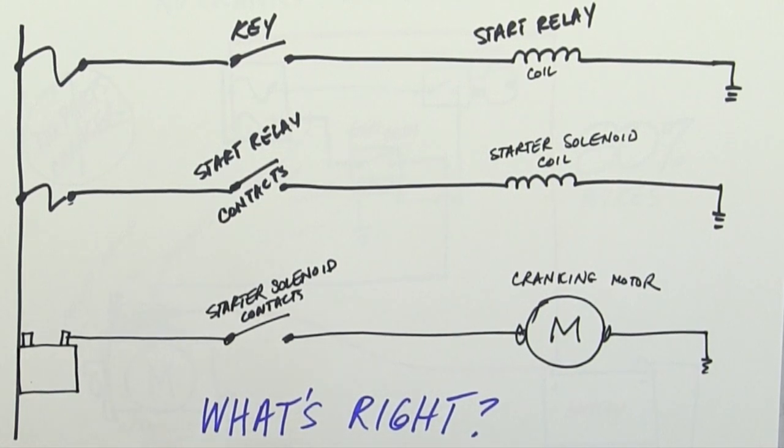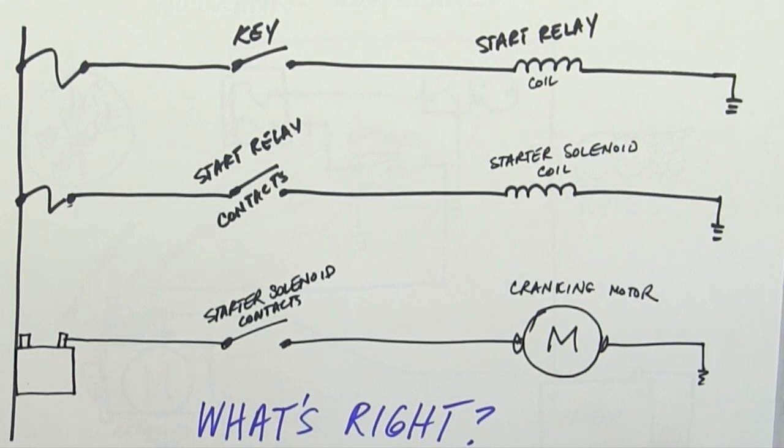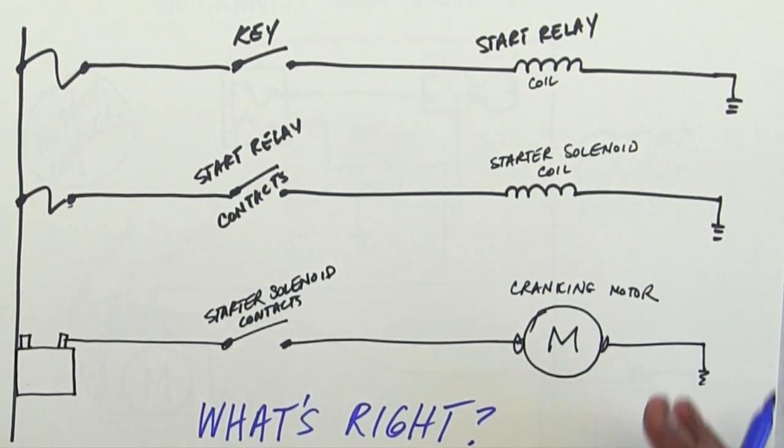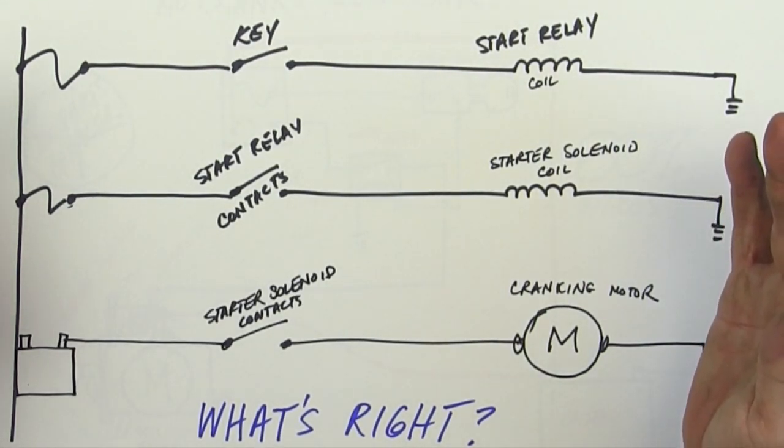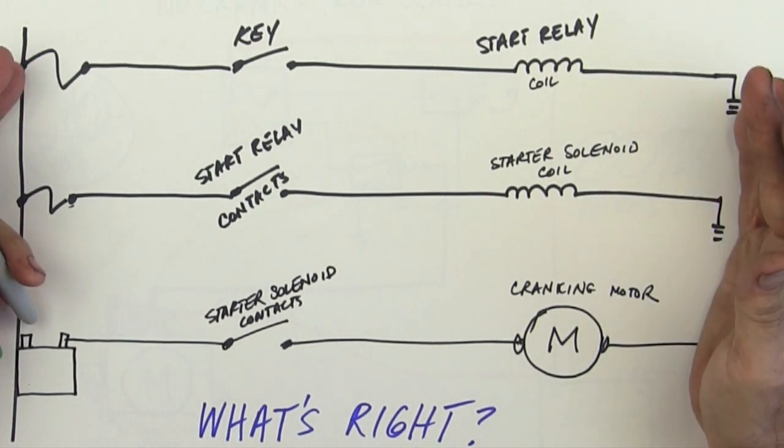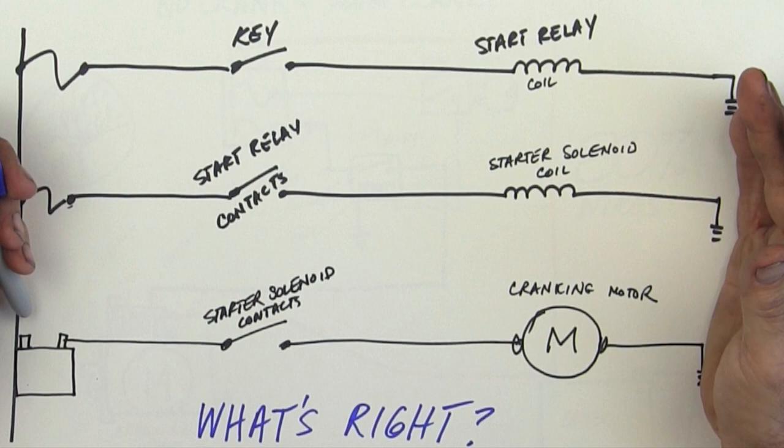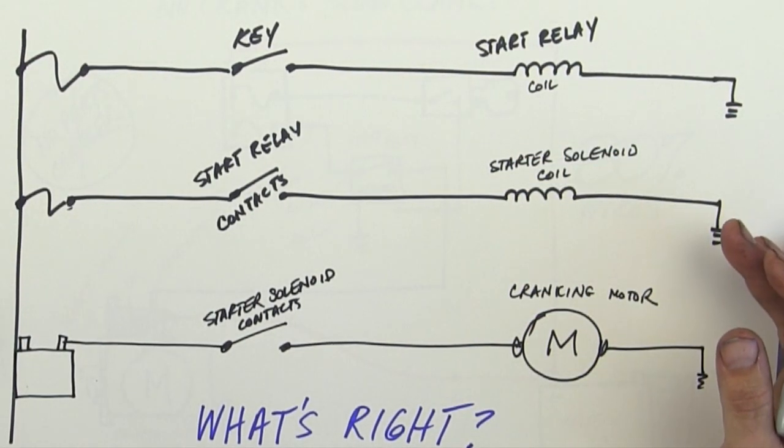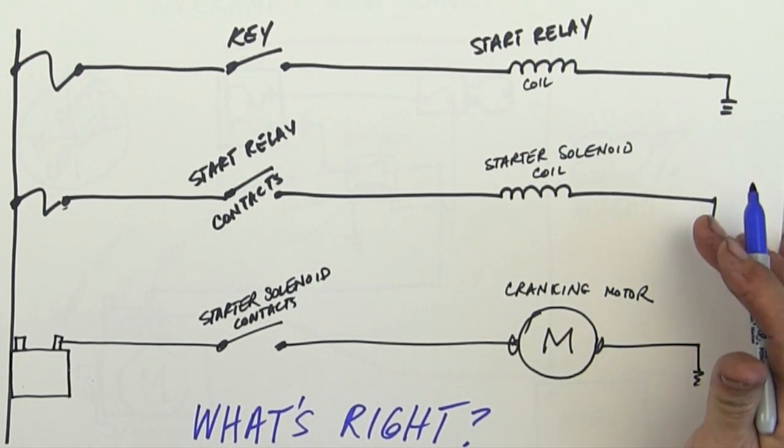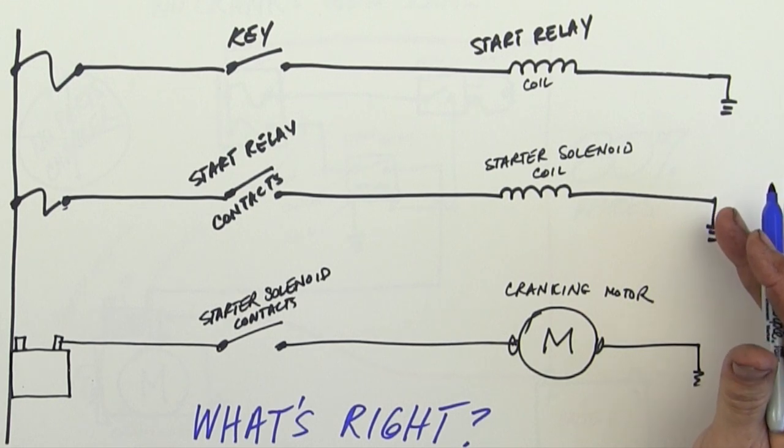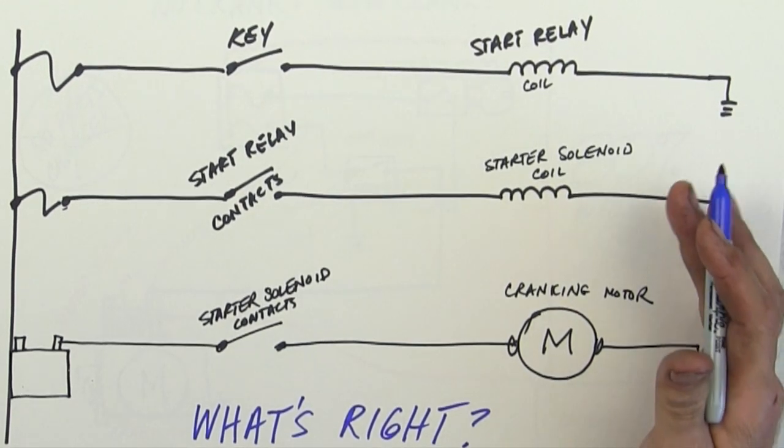So let's talk about a basic diagnostics scenario. Number one. If we have a no crank situation, this is the system with these three circuits that are going to be involved.